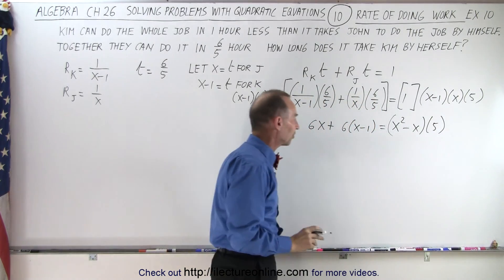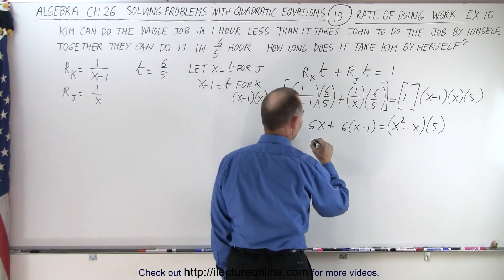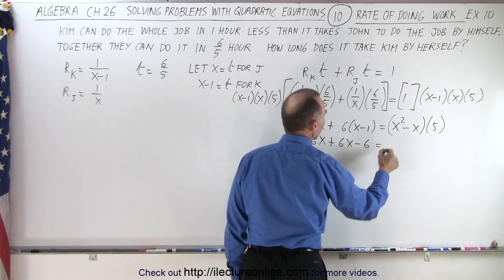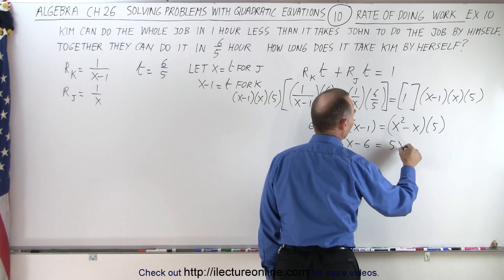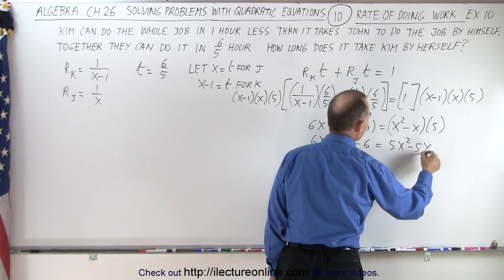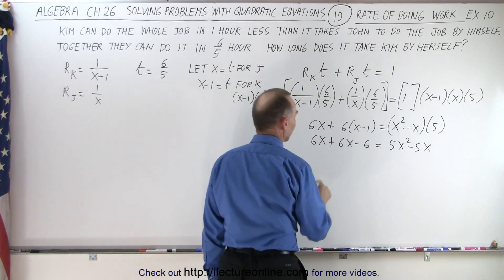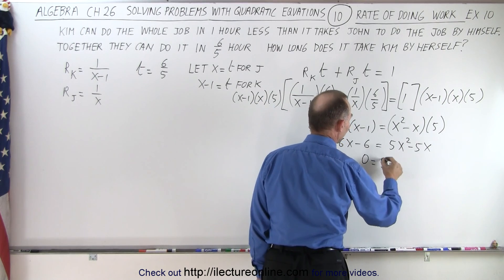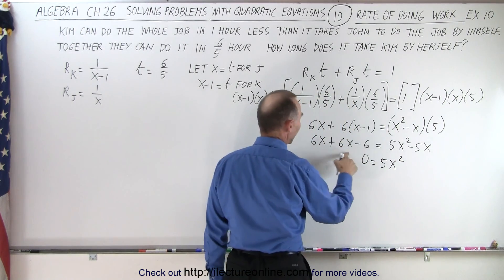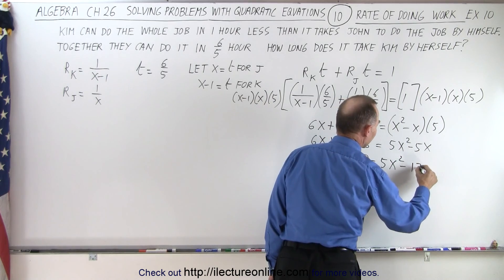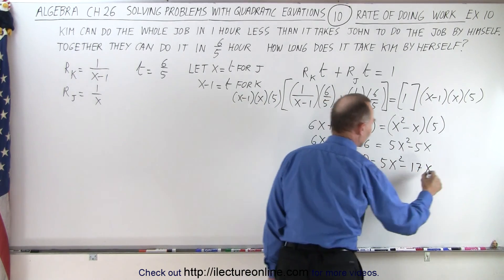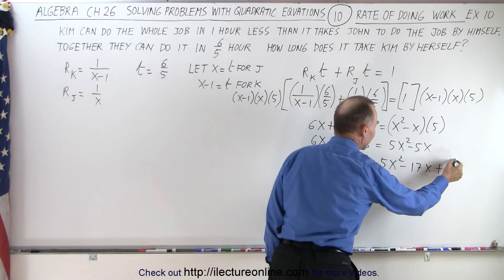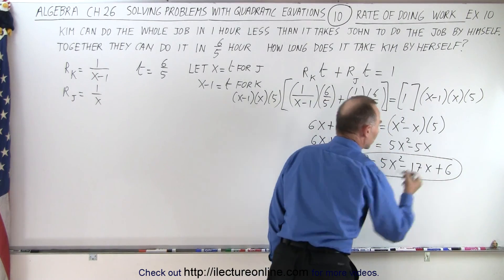We multiply this out: we get 6x plus 6x minus 6 equals 5x squared minus 5x. This gives us 12x; moving to the other side we get zero equals 5x squared, minus 17x, and minus six goes across to give plus six. And there is the quadratic equation we're trying to solve.